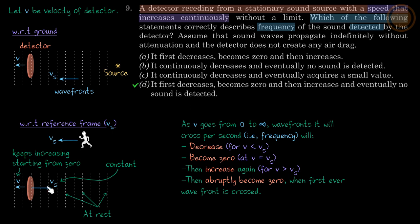So initially, the detector has vs speed faster than the wavefronts, so frequency is detected. Then the frequency decreases until it becomes zero when v equals vs. Then frequency increases again for v greater than vs, and eventually abruptly becomes zero when the first ever wavefront is crossed.